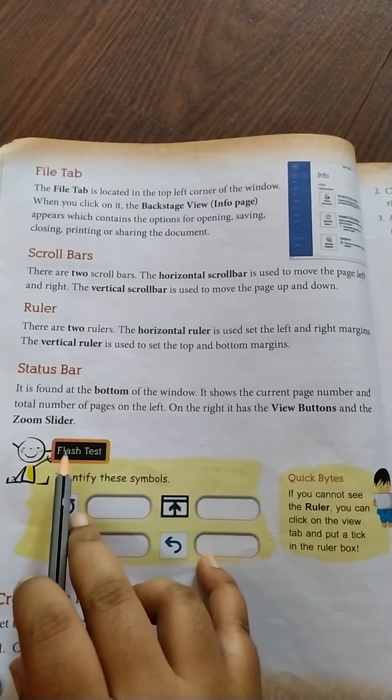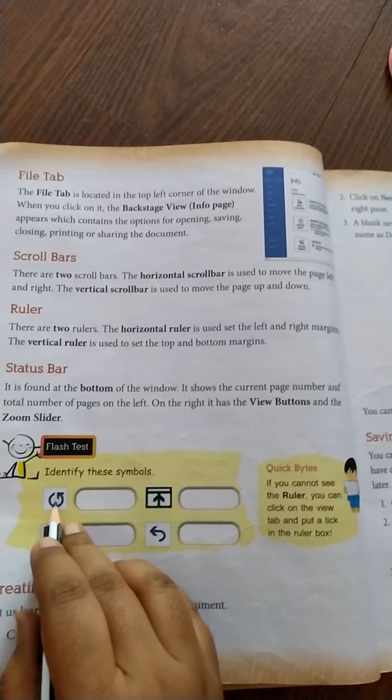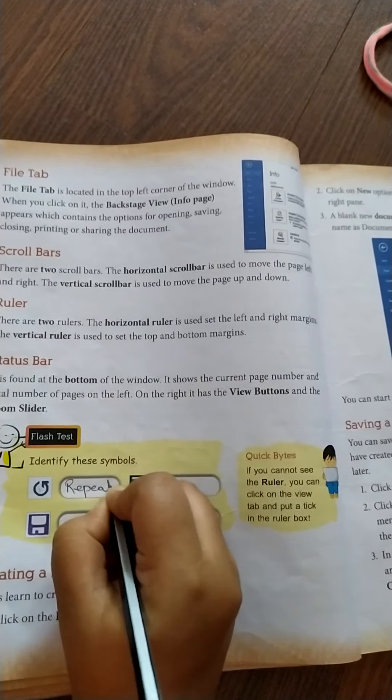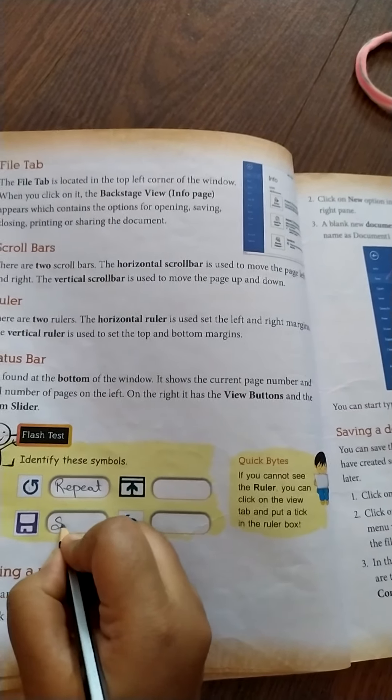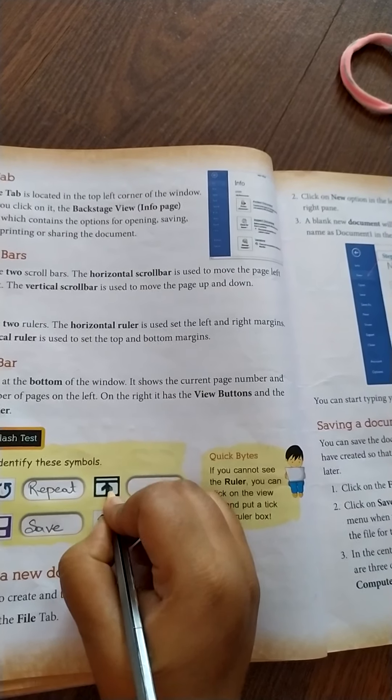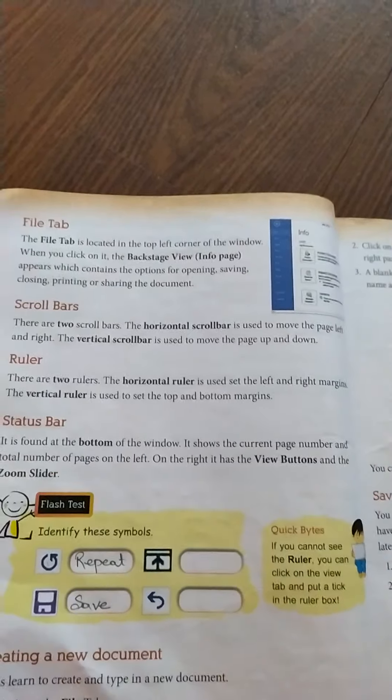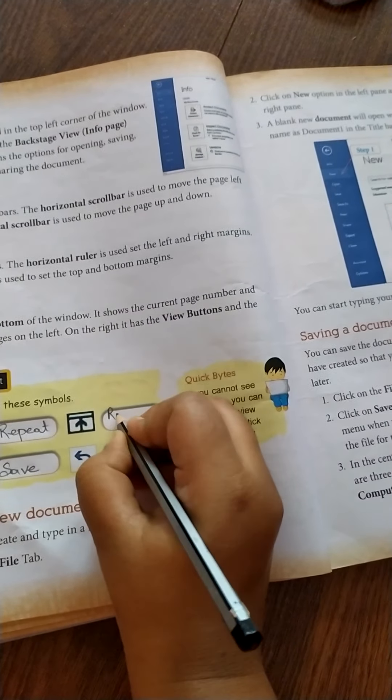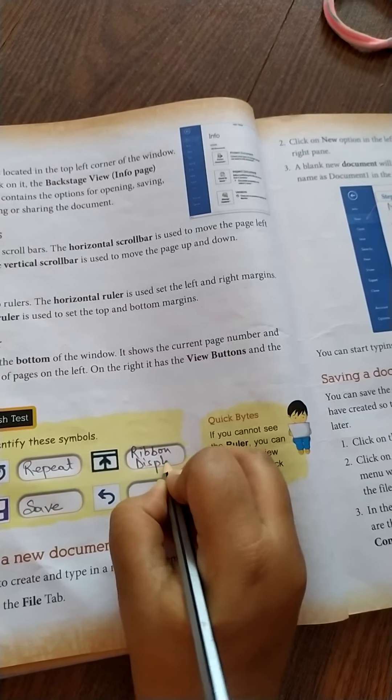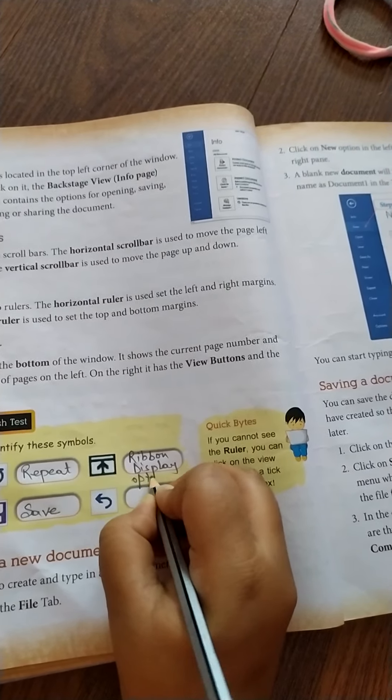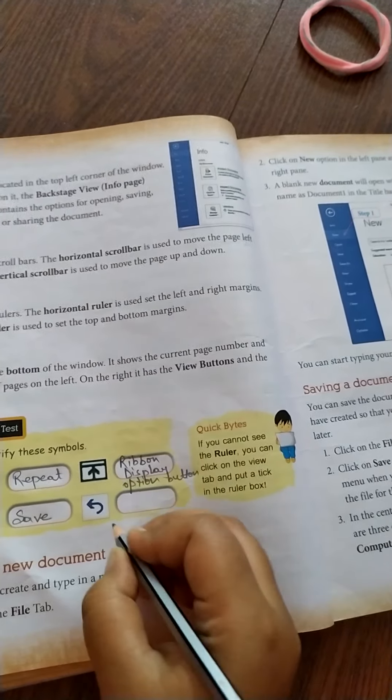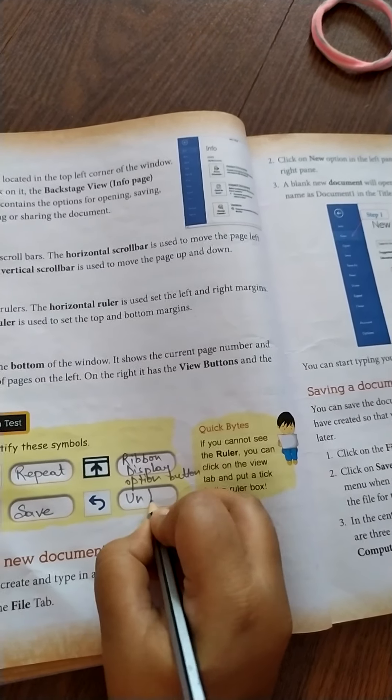We have a flash test over here. This is called the repeat button. This one is called the save button. This one is called the ribbon display option button. And this one is the undo button.